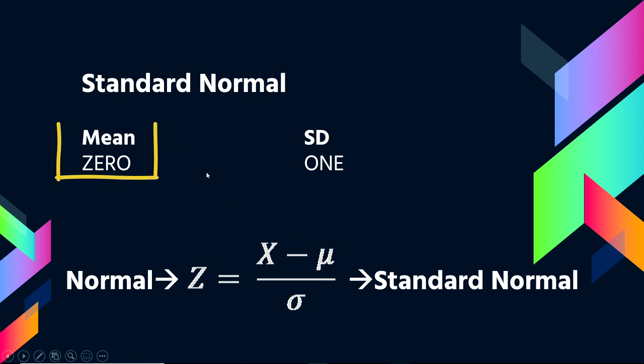So the mean of the standard normal distribution is zero. And the standard deviation becomes one, because if a score is 15 points from the mean and a standard deviation is 15, then that ends up being just one standard deviation. So z-scores always in that zone.